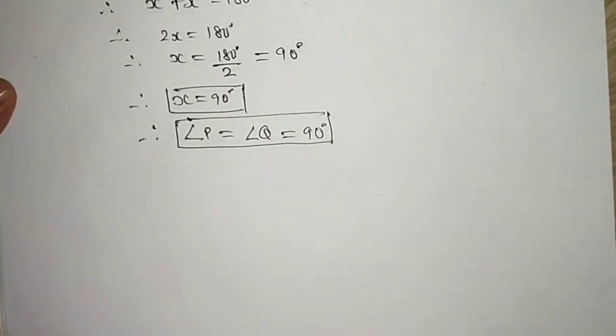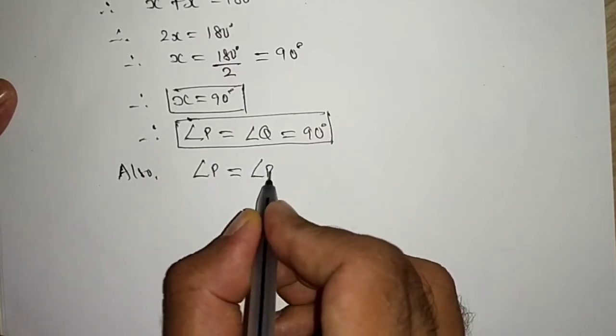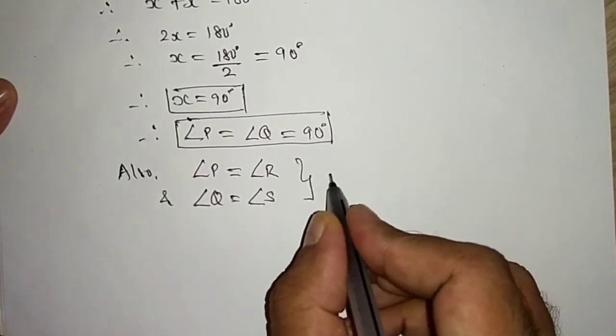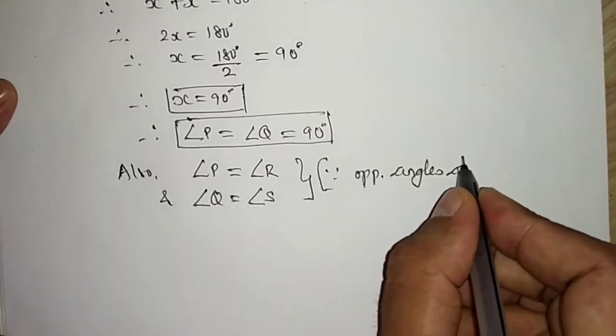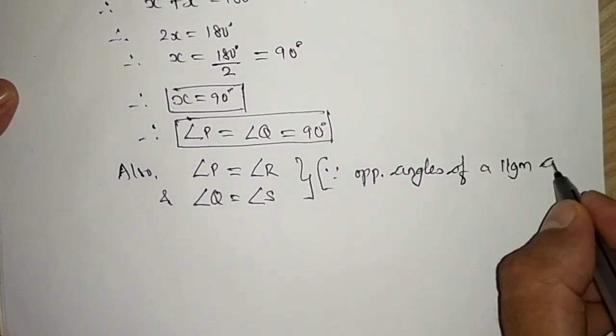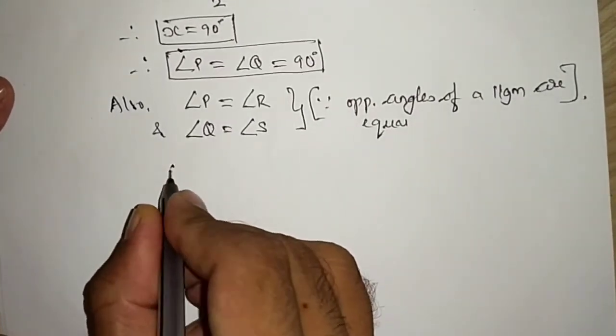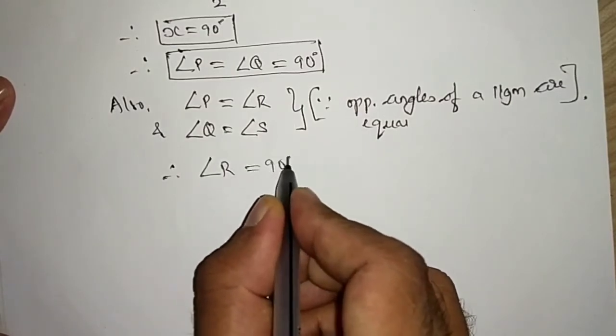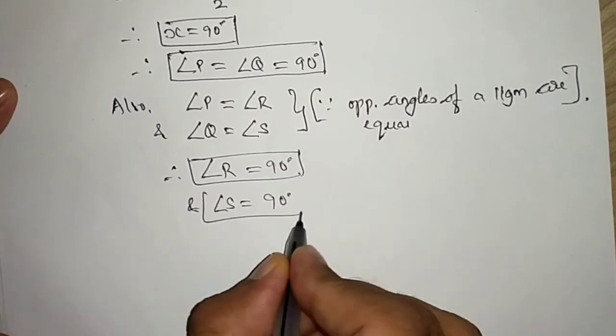Also, angle P is equal to angle R, and angle Q is equal to angle S. Why? Because opposite angles of a parallelogram are equal. So can I say therefore angle R is equal to 90 degrees and angle S is equal to 90 degrees?